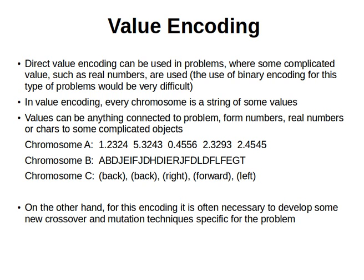In value encoding, every chromosome — every candidate solution — is a string of some values. The values can be anything connected to the problem: they can be real numbers, characters, or other complicated objects.